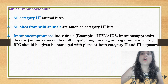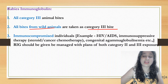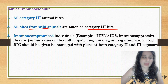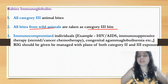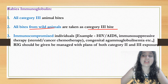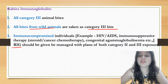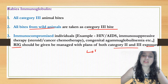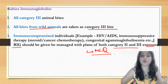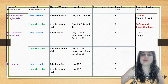All Category 3 bites receive immunoglobulin. All bites from wild animals are treated as Category 3. Immunocompromised individuals — including HIV/AIDS, those on steroids, cancer chemotherapy, or with congenital agammaglobulinemia — should receive immunoglobulin with both Category 2 and Category 3 exposure. This is an important MCQ point.